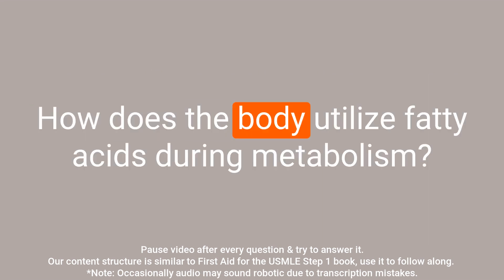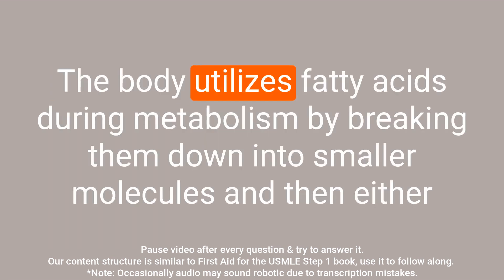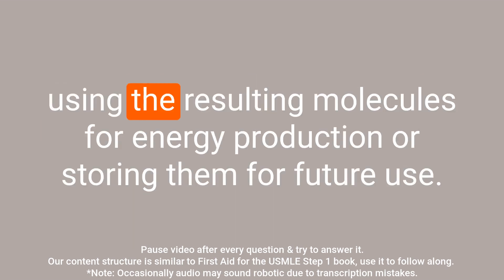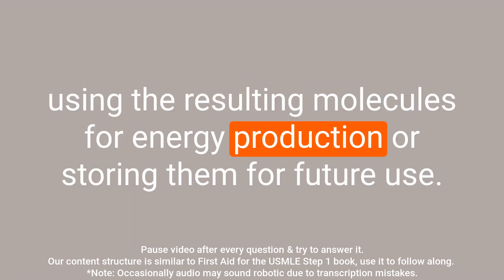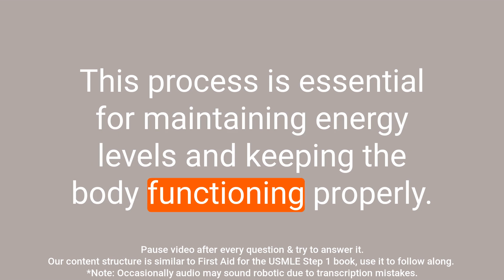Question: How does the body utilize fatty acids during metabolism? Answer: The body utilizes fatty acids during metabolism by breaking them down into smaller molecules and then either using the resulting molecules for energy production or storing them for future use. This process is essential for maintaining energy levels and keeping the body functioning properly.